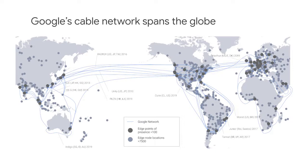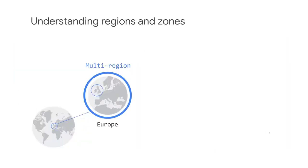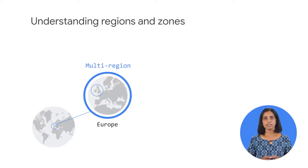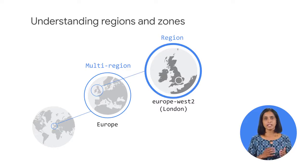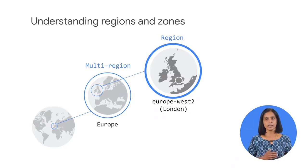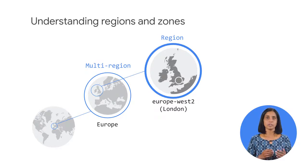Our edge caching network places content close to end users to minimize latency. Applications in GCP can take advantage of this edge network too. Google Cloud divides the world into three multi-regional areas: the Americas, Europe, and Asia Pacific. The three multi-regional areas are divided into regions, which are independent geographic areas on the same continent.